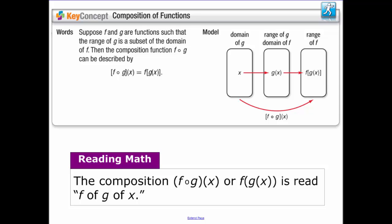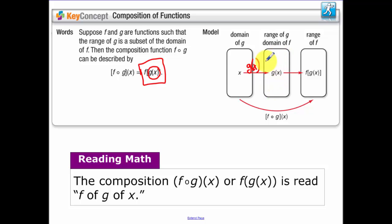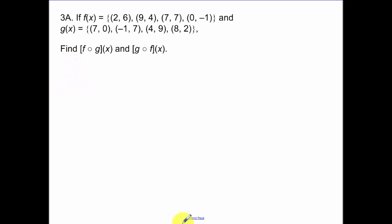Next: composition of functions. Think of it as one function g of x inside another function f of x. You take all the x-values in the domain of g of x, run them through g of x to get outputs — the range of g of x. Those y-values then get put into f of x, and you go through f of x to get your composition f of g of x. To find f of g of x, I look at the domain of g of x.